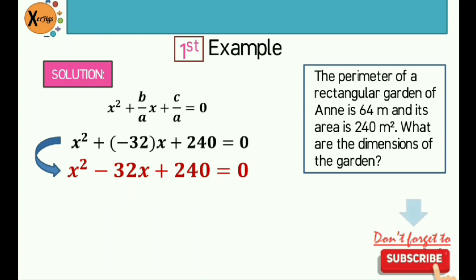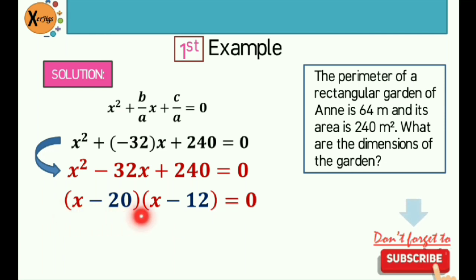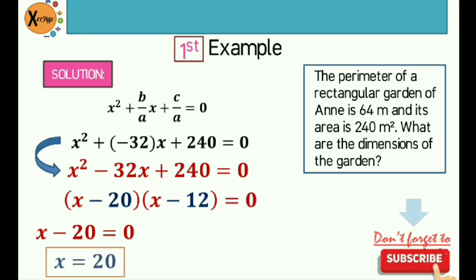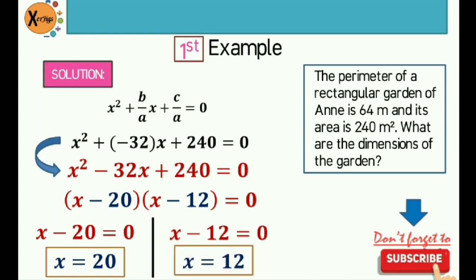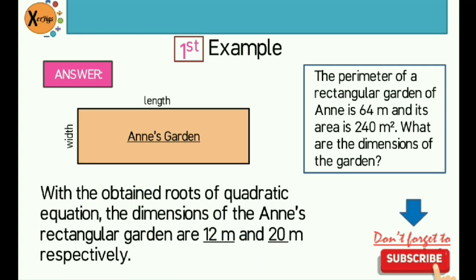Since we now have a quadratic equation in standard form, we can use factoring to solve for its roots. I used factoring and came up with two factors: (x − 20)(x − 12) = 0. The pair of factors that gives a product of 240 and a sum of negative 32 are negative 20 and negative 12. Applying the zero product rule: x − 20 = 0 gives x = 20, and x − 12 = 0 gives x = 12. Therefore, the dimensions of Anne's rectangular garden are 12 meters and 20 meters.